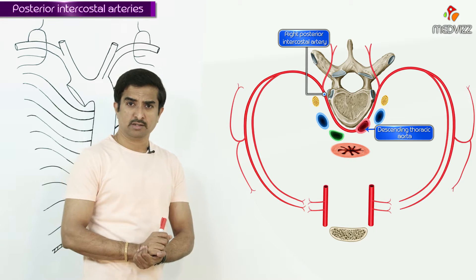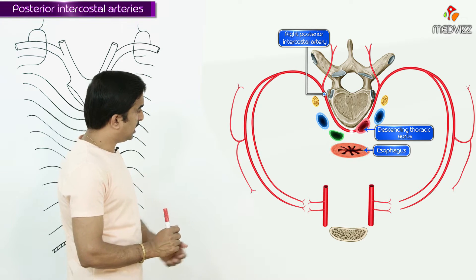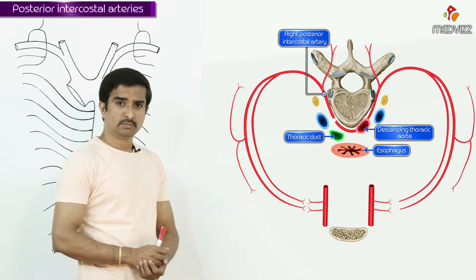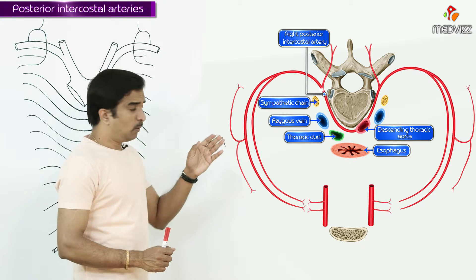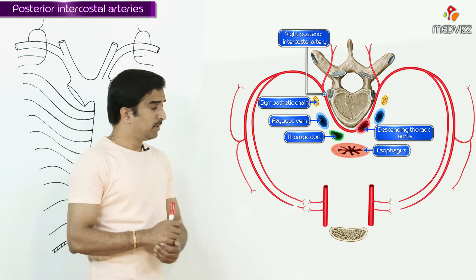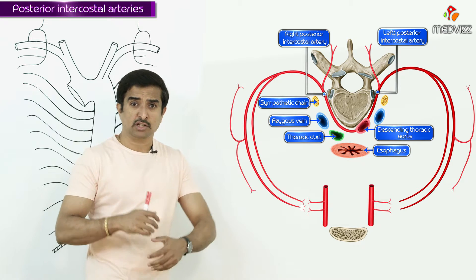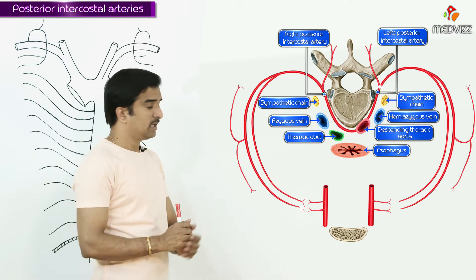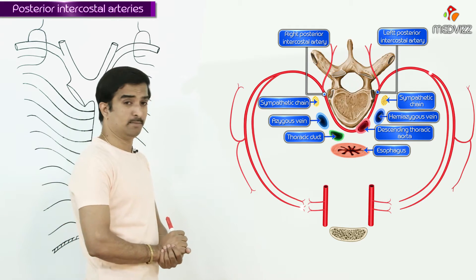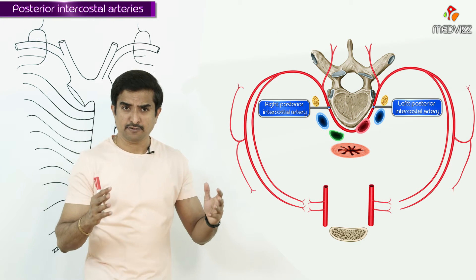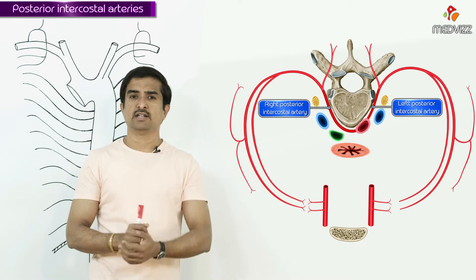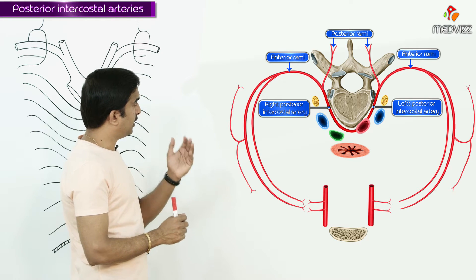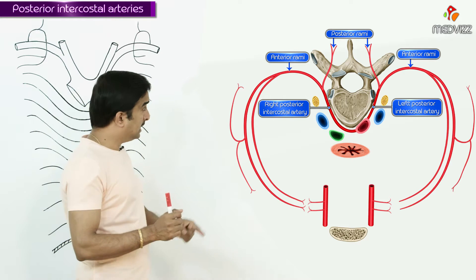The right posterior intercostal arteries run behind the esophagus, behind the thoracic duct, behind the azygous vein and sympathetic chain, and are anterior to the vertebral body. The left posterior intercostal arteries, which are smaller than the right ones, run behind the hemiazygous vein, the sympathetic chain, and anterior to the vertebral body. Both right and left posterior intercostal arteries divide into anterior rami and posterior rami, also called dorsal rami.